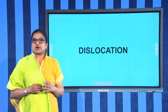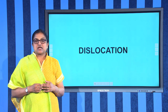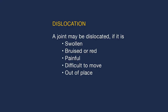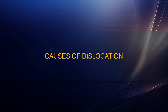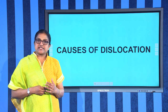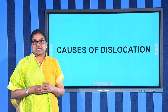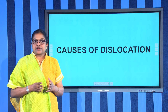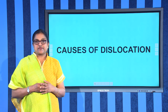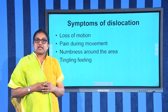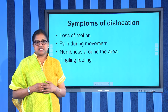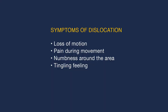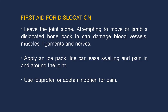An untreated dislocation could cause damage to your ligaments, nerves, or blood vessels. A joint may be dislocated if it is swollen, bruised, or red, painful, difficult to move, or out of place. Dislocations typically result when a joint experiences an unexpected or unbalanced impact, such as a fall or a harsh hit. After a joint dislocates, it is more likely to dislocate again in the future. Other symptoms include loss of motion, pain during movement, numbness, and tingling.